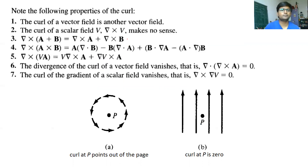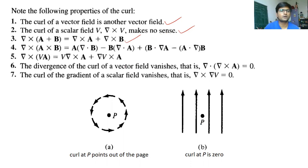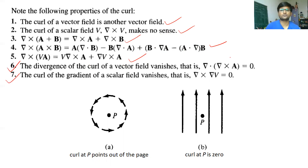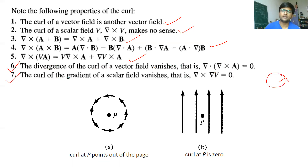These are a few properties of curl you should remember. Curl is taken for a vector and its outcome is also a vector; that is why the curl of a scalar field makes no sense. This is the expansion rule applicable for curl. You should remember these formulas, which may be used in electromagnetic field theory and antenna theory. Points six and seven are particularly important: the divergence of the curl of a vector field is zero.